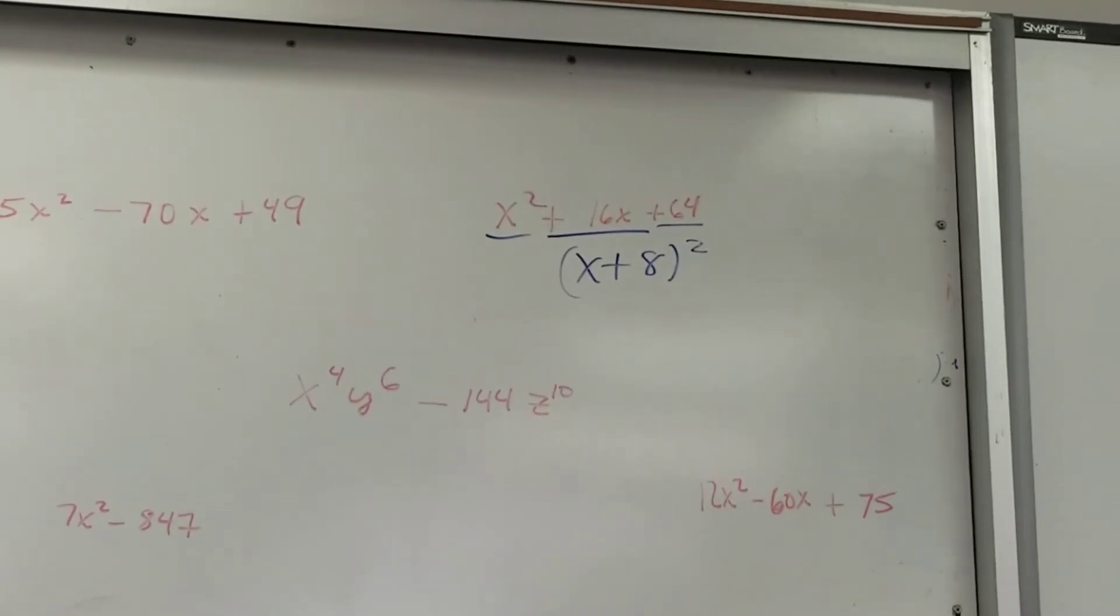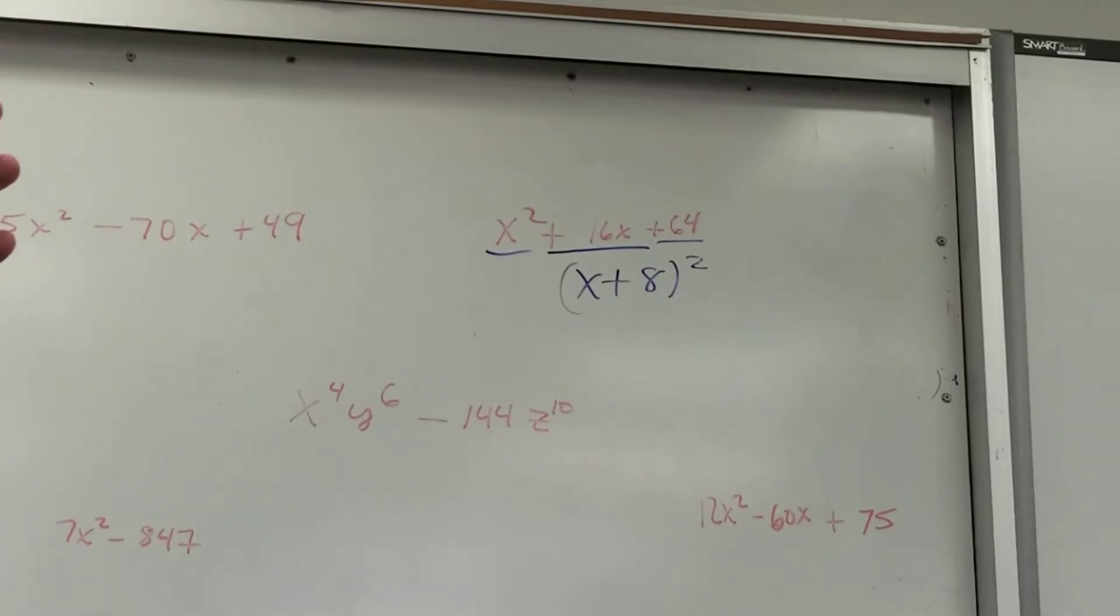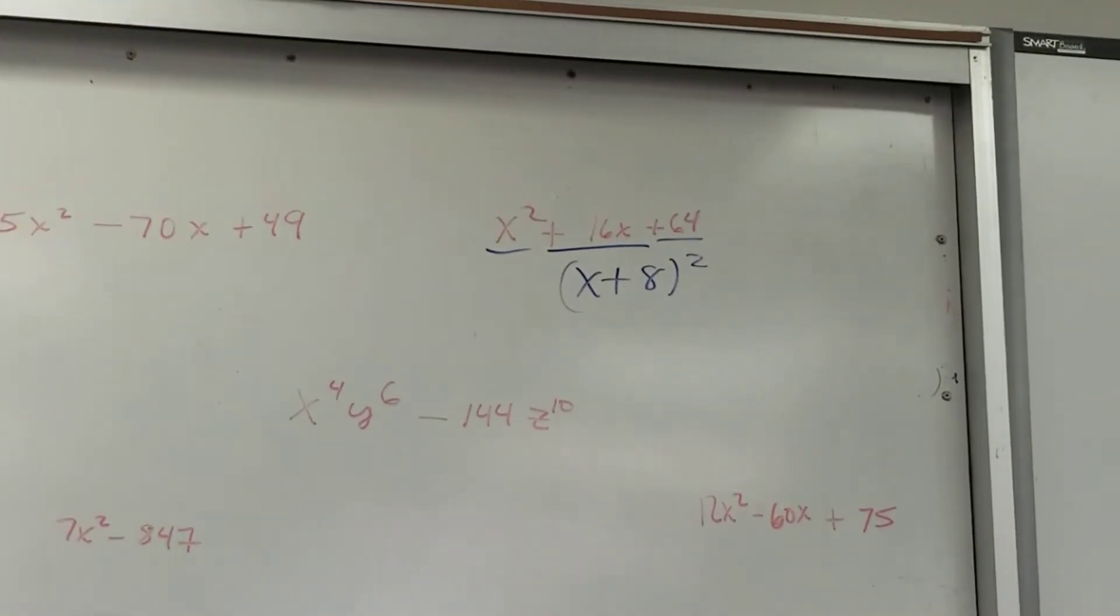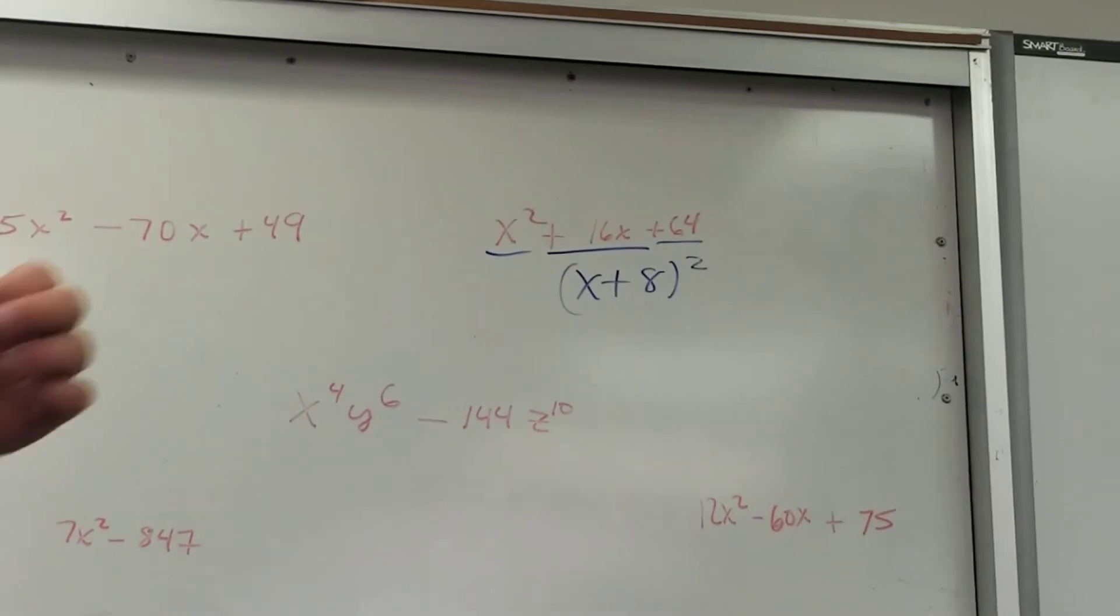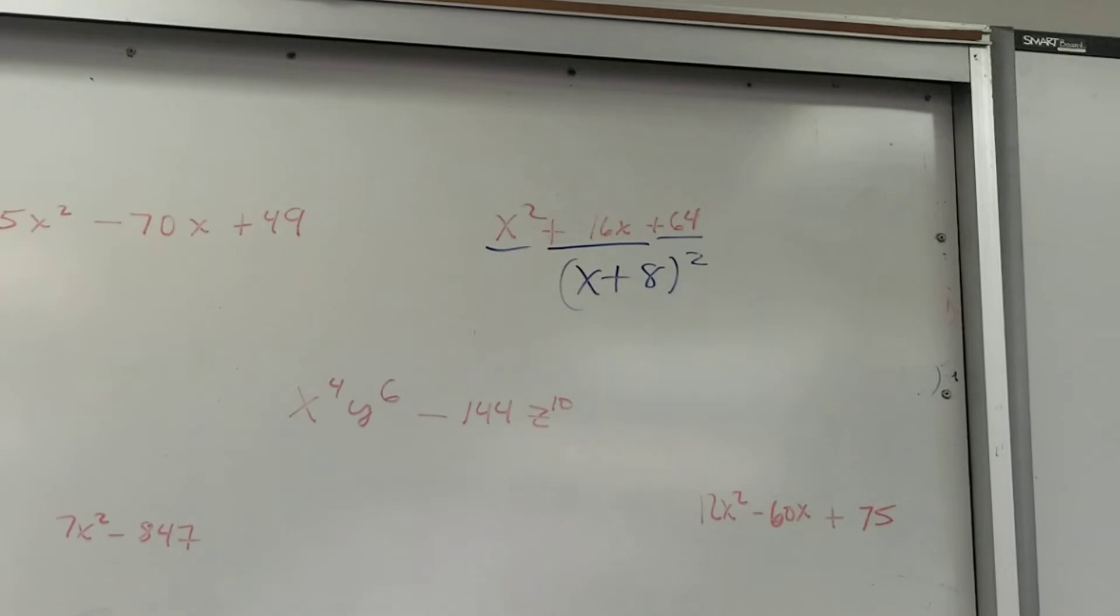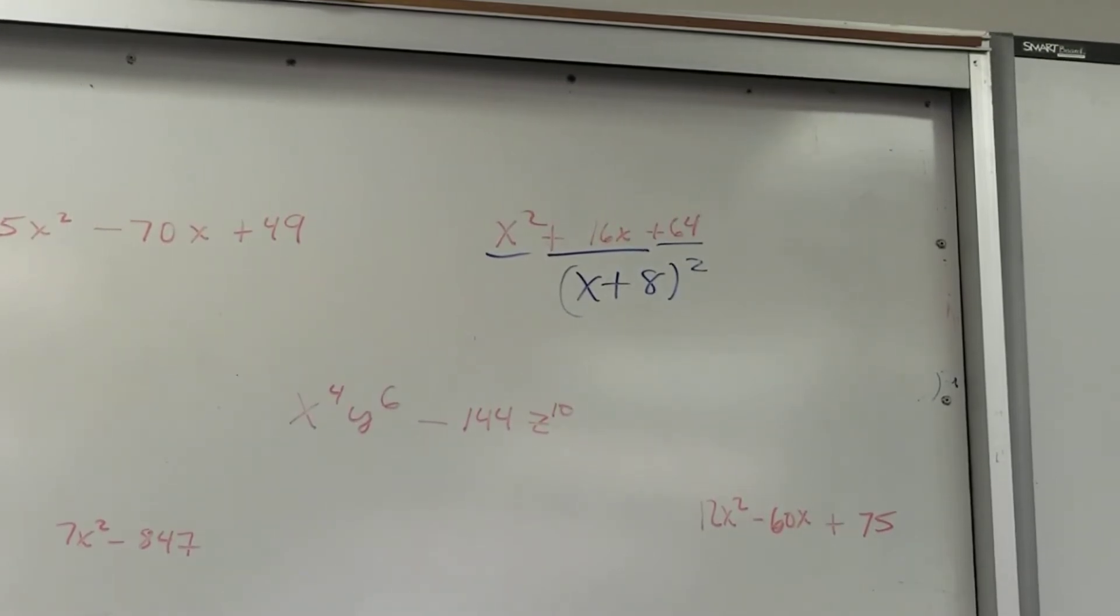The middle term, doesn't matter whether it's positive or negative, but the middle term's coefficient has to be double the square roots product. It has to be double the square roots product.